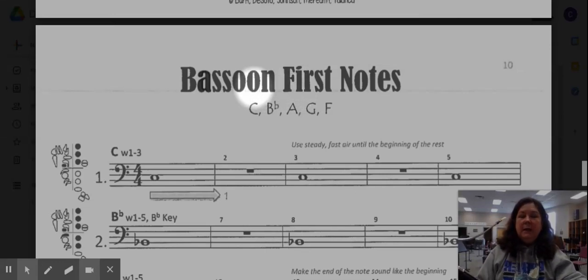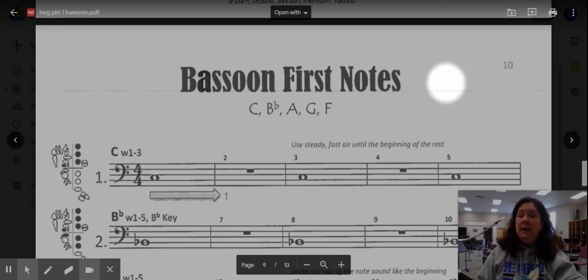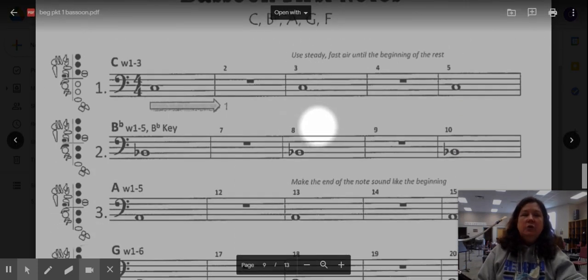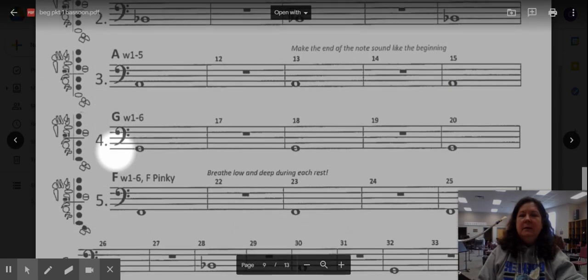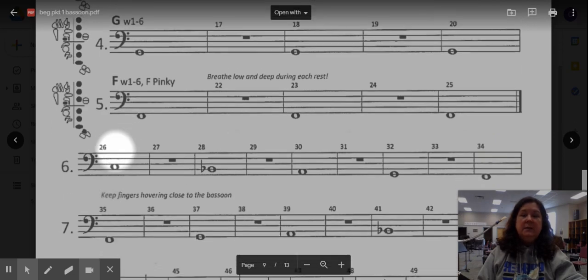Today we're going to be looking at a few more lines of your bassoon first notes page, which is page number 10 in your packet. By now you should be comfortable with C, B flat, A, G, and the F fingerings.